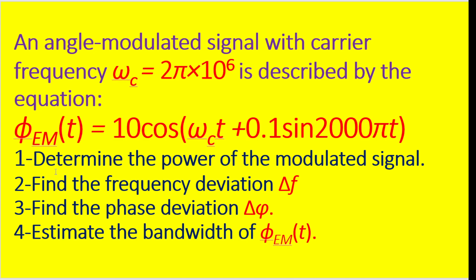Hello and welcome to Technically Explained. In this video we are going to solve a problem related to angle modulation. The problem states that an angle modulated signal with carrier frequency omega c equal to 2π × 10⁶ is described by a given equation.